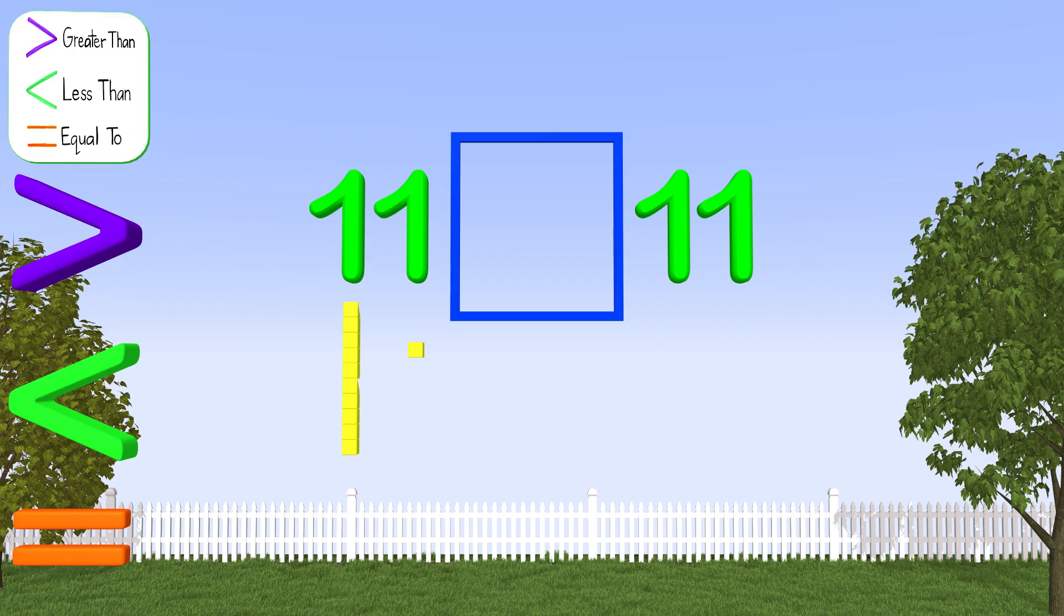Now for the number on the right side, it is 11, just like the number on the left. So we use the same amount of blocks. Many of you probably already know which symbol we will use. Can you tell me the symbol? The equal sign. Great job, kids! Reading from left to right, we say 11 is equal to 11. Awesome!